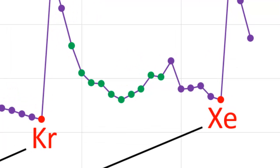For instance, the atomic radius increases from ruthenium to indium, but in general, atomic radius tends to decrease all the way down to the next noble gas, and then spikes upward again at the next alkali metal.